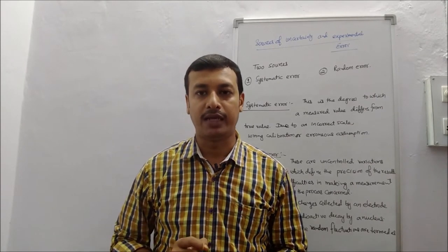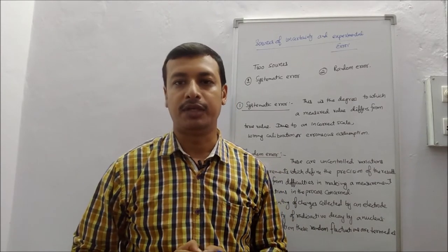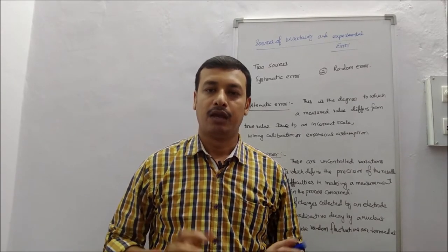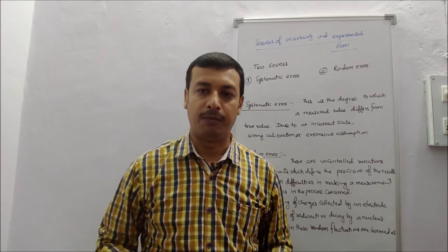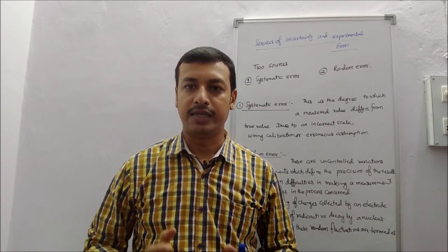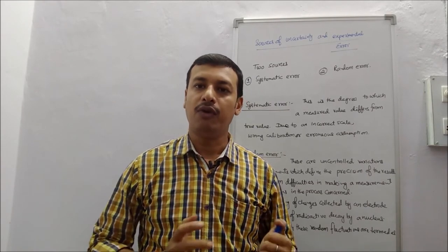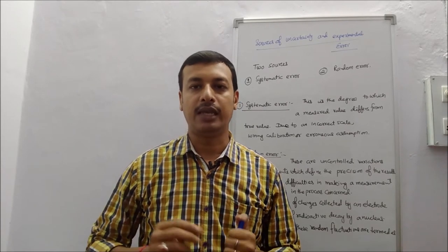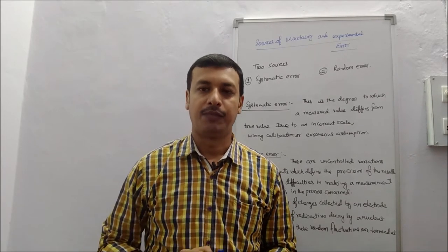The ideal value — the true value — should be 9.8 meters per second squared, but due to the bob's radius, or the length of the pendulum, or environmental factors like temperature increase or decrease, the value comes close to 9.8 but cannot reach exactly 9.8 in the lab. This is systematic error.